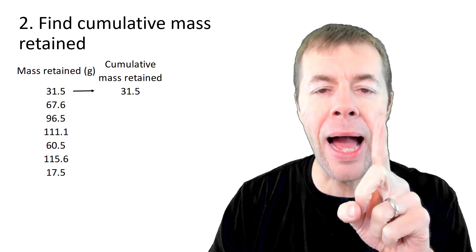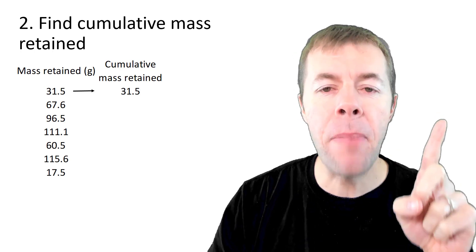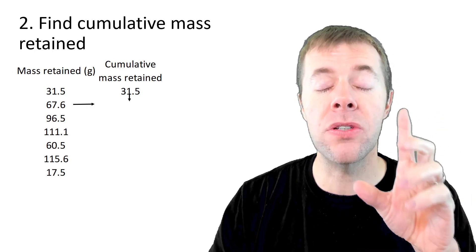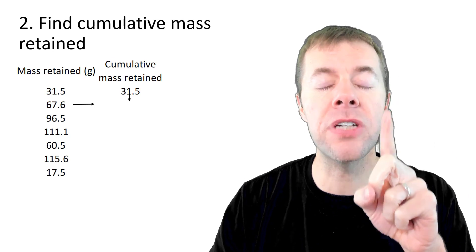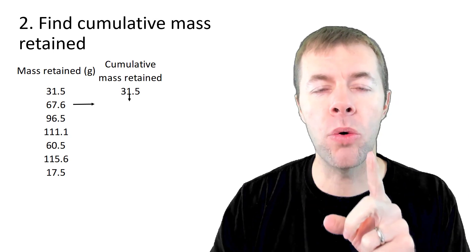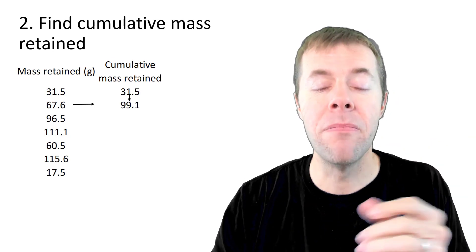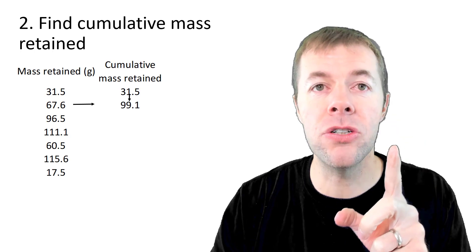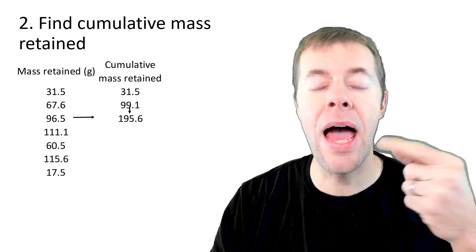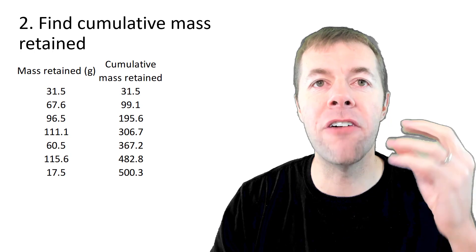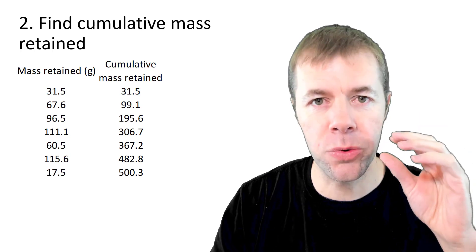Now we're going to add that 31.5 to the mass retained on the next sieve. So the next number is just the sum of 67.6 plus 31.5, which is 99.1. Then we just continue this process again and again until we have all of our cumulative mass retained.